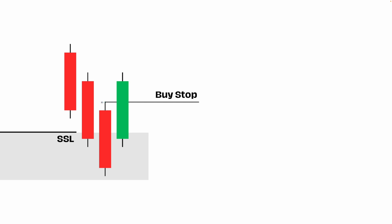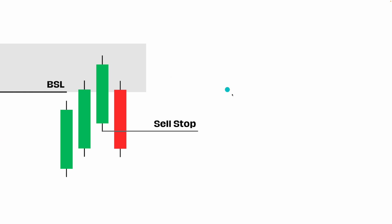I would set my order just on the top of the wick of the previous bearish candle. Then once this green bullish candle starts forming and trades through our buy stop, our order would be triggered. You would then be looking for price to continue to the upside and take profit wherever you look to take your profits.